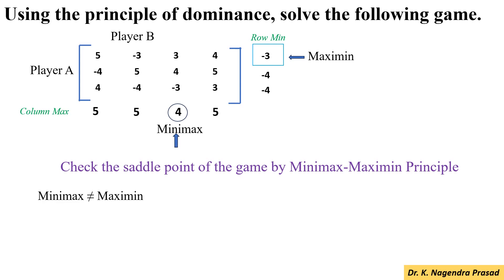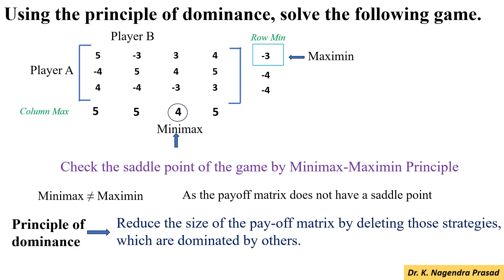Here, the given game does not have a saddle point because minimax is not equal to maximin. Then, we have to apply the principle of dominance to reduce the size of the payoff matrix by deleting those strategies which are dominated by others.